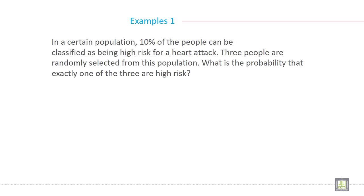In a certain population, 10% of the people can be classified as being high risk for a heart attack. Three people are randomly selected from this population. What is the probability that exactly one of the three are at high risk?